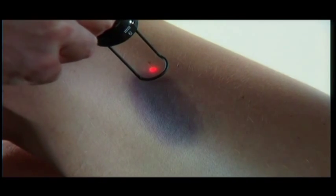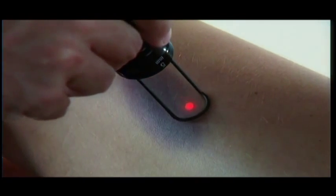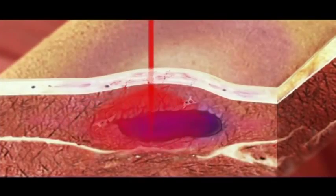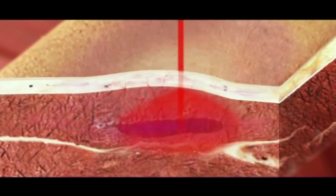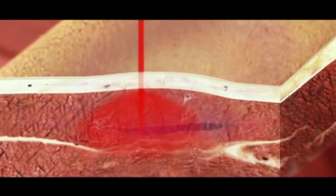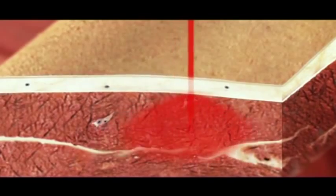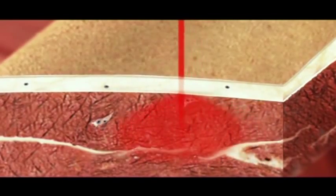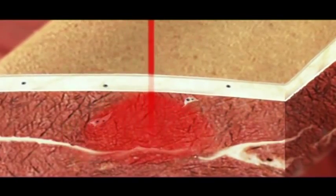The HILT impulse reaches the deep-seated tissue affected by the blood loss, stimulates the circulation and the lymph draining pump, rebalancing tissue metabolism for rapid return to functionality.